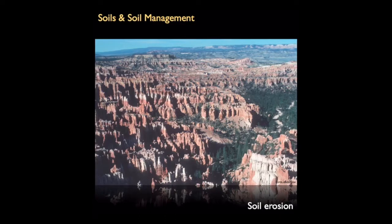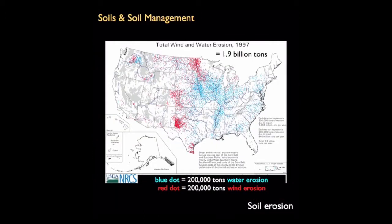The forces of erosion clearly give rise to magnificent structures. Years of wind and water erosion have created the beautiful views of a place like Bryce Canyon in Utah. But soil erosion across much of the USA may look a lot less spectacular than the Grand Canyon, but it still occurs, and it involves some pretty prodigious numbers, as well as the same basic forces of rain, water, wind, and freezing thawing at work. On this map, showing total wind erosion across the United States in 1997, note that each dot — either blue for water erosion or red for wind erosion — represents 200,000 tons of soil. These are indeed prodigious numbers.